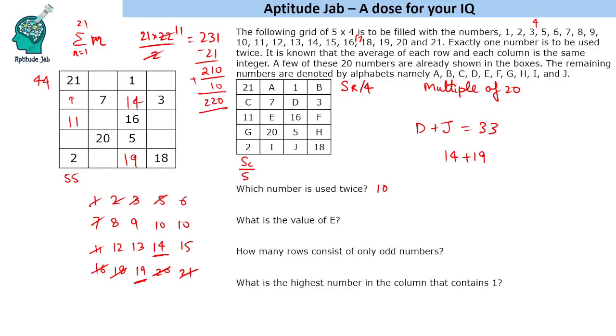This should be 20 to make it 44, but 20 is already used. That means it will be the other way round.